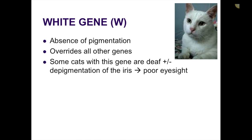The white gene is an absence of pigmentation — it overrides all other genes, which is why they call it a mask. Regardless of whatever color would typically show up, if the white gene is present it's going to override all other genes. Some cats with this gene are deaf, plus or minus depigmentation of the iris. If they get the gene where they have depigmentation of the iris — i.e., it remains a really light blue color — then in that specific eye they can get poor eyesight. So there is a connection between white cats and poor eyesight, specifically when they also have lack of color in their iris.